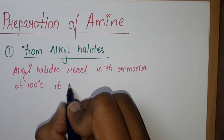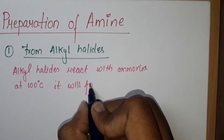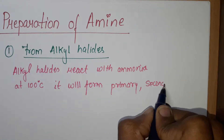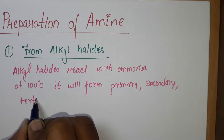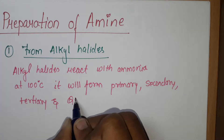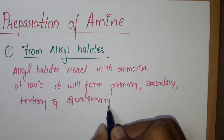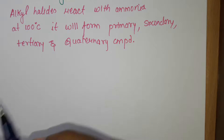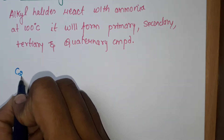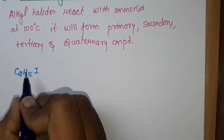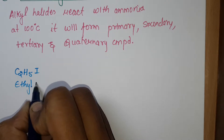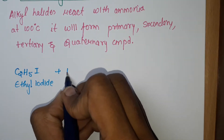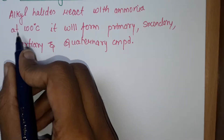It will form primary, secondary, tertiary, and quaternary compounds. Let's see how. Take one alkyl halide — C2H5I, ethyl iodide — and react it with ammonia (NH3) at 100 degrees Celsius.